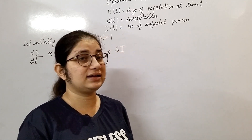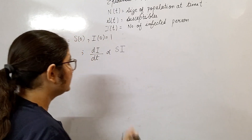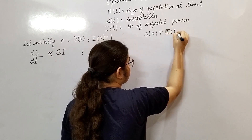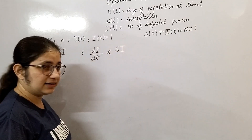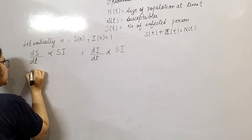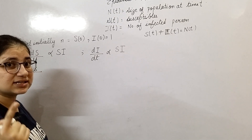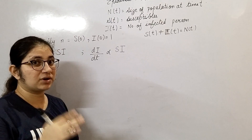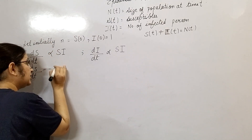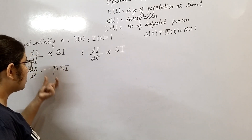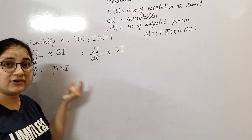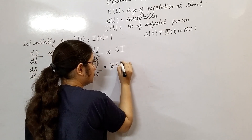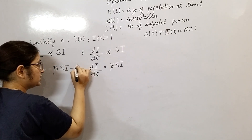Both rates are proportional to S·I. Also since every member of the population is either susceptible or infected, we have S(t) + I(t) = N(t). Removing the constant of proportionality: dS/dt has a negative beta because susceptibles are decreasing, giving dS/dt = -β·S·I. And dI/dt = +β·S·I because infected persons are increasing.